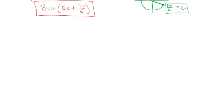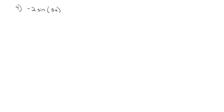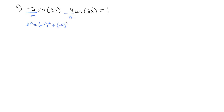Let's try another one. We're going to do −2·sin(3x) − 4·cos(3x) = 1 and solve for x. We've got both sine and cosine, which makes it difficult to solve directly. So we're going to rewrite this as a single sine, where m = −2 and n = −4. So a² = (−2)² + (−4)² = 4 + 16 = 20, meaning a = √20.